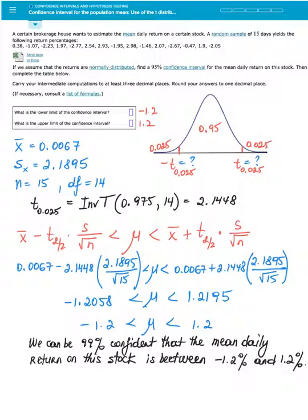A random sample of 15 days yields the following return percentages: 0.38, -1.07, 2.23, 1.97, -2.77, 2.54, 2.93, -1.95, 2.98, -1.46, 2.07, -2.67, -0.47, 1.9, -2.05.